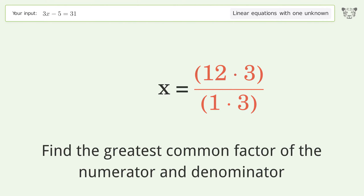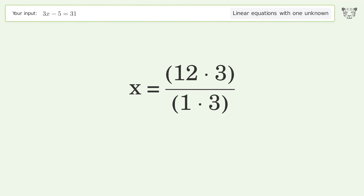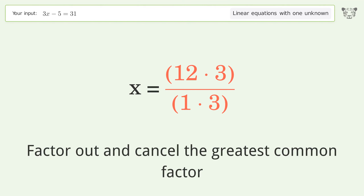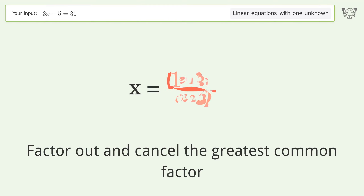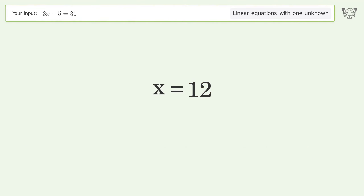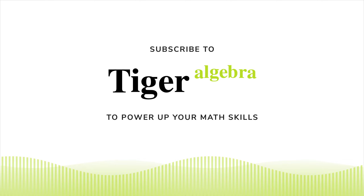Find the greatest common factor of the numerator and denominator. Factor out and cancel the greatest common factor. And so the final result is x equals 12.